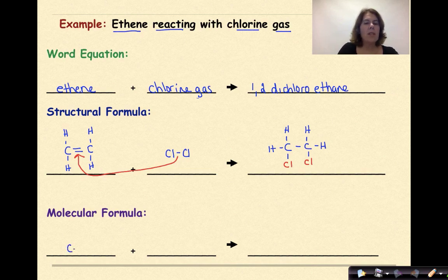What would this look like in a molecular formula? We'd have C2H4 plus Cl2, representing our diatomic chlorine. For our molecular formula, we'd have C2H4Cl2.